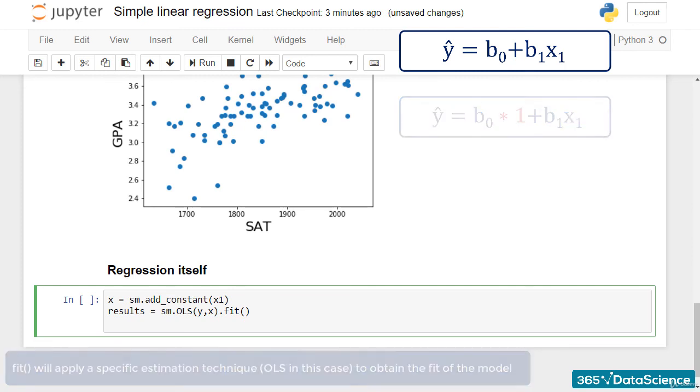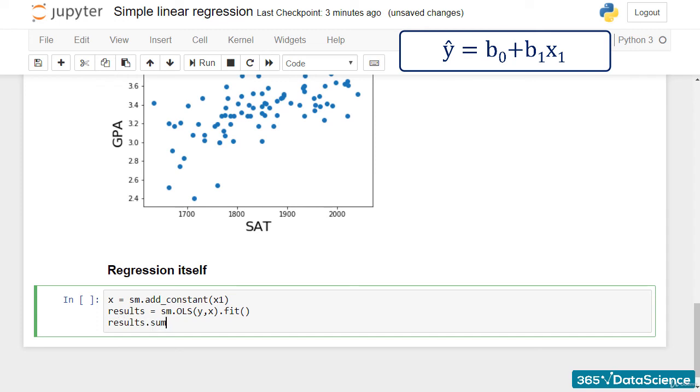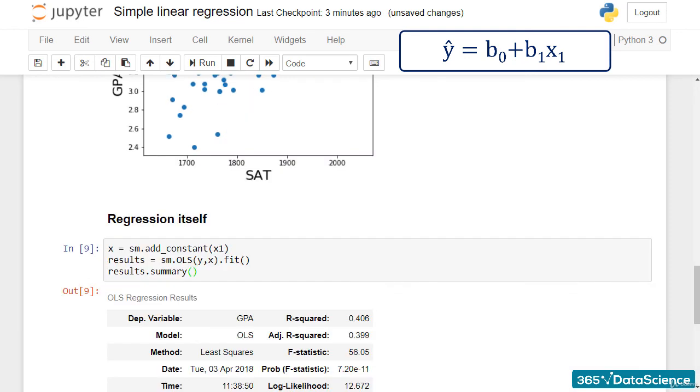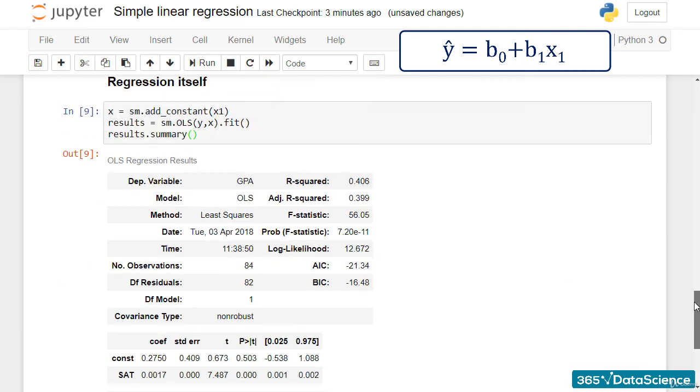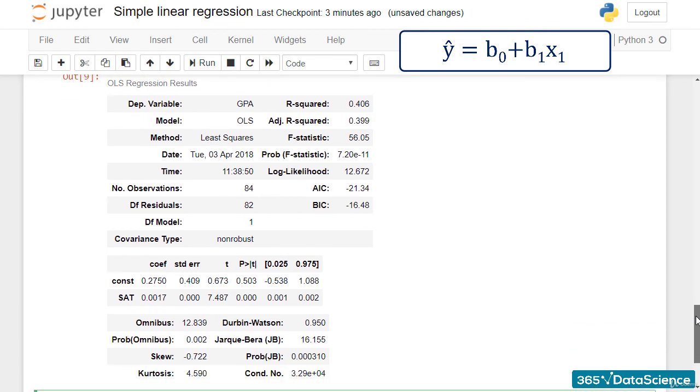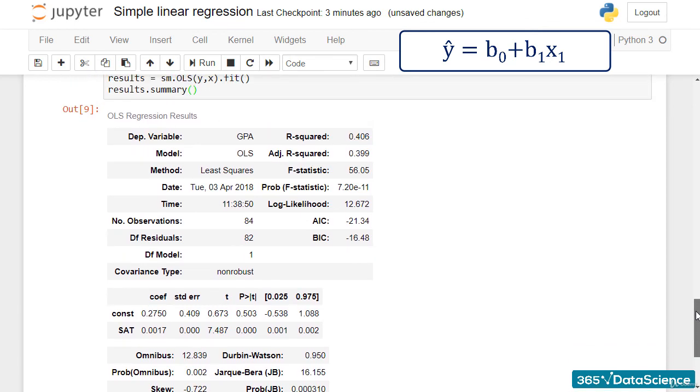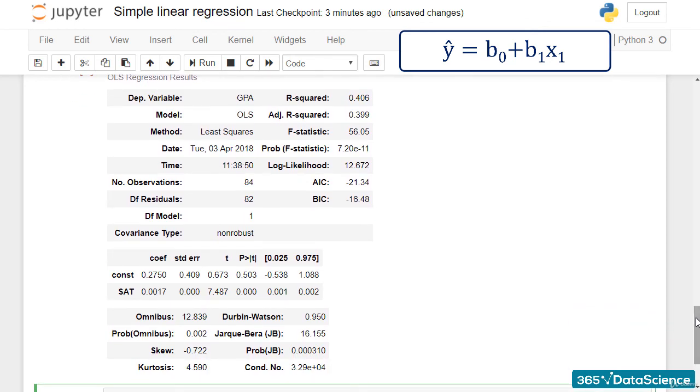In any case, results.summary will display the regression results and organize them into three tables. As you can see, we have a lot of statistics in front of us, and we will examine them in more detail in subsequent lectures.